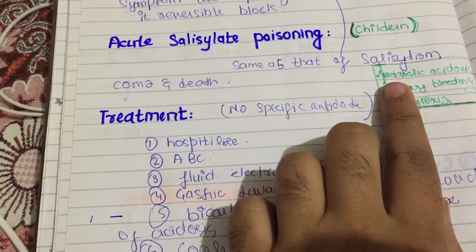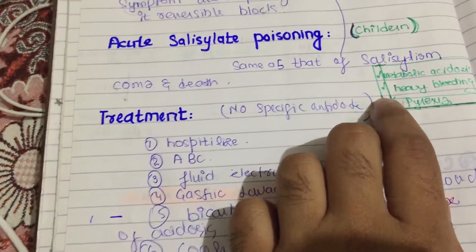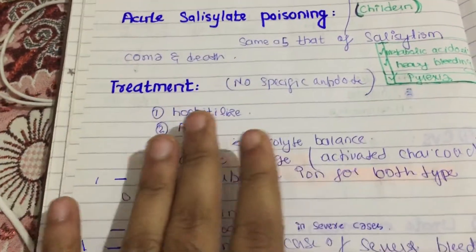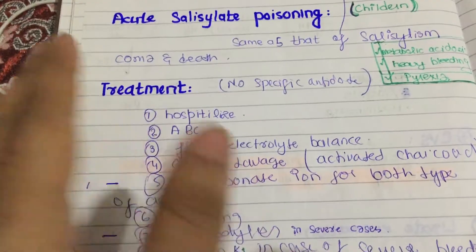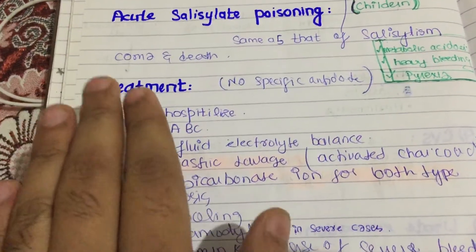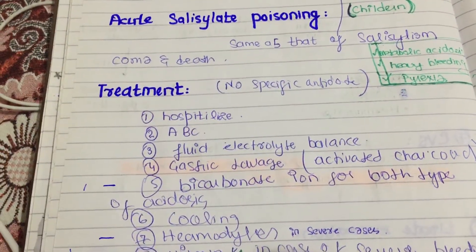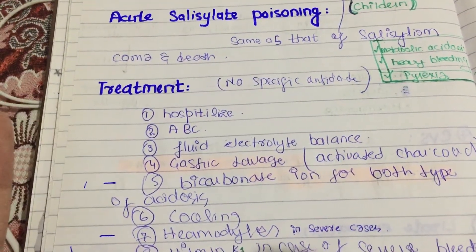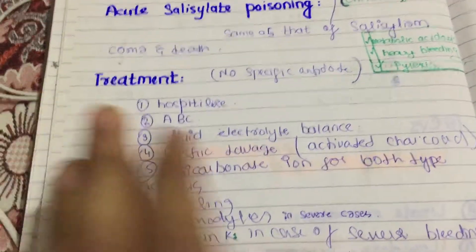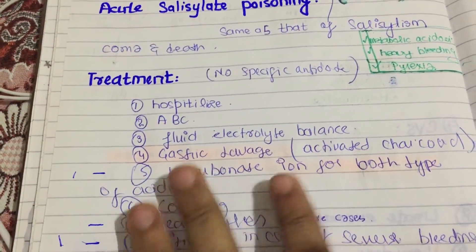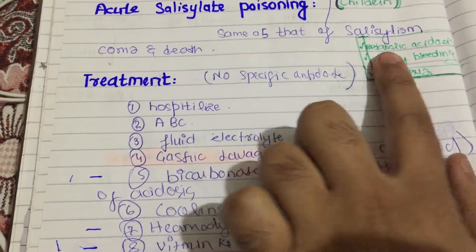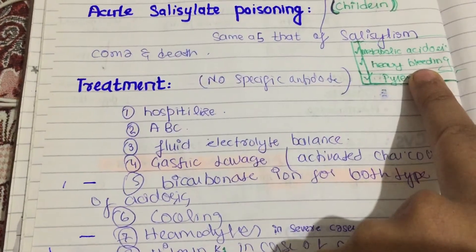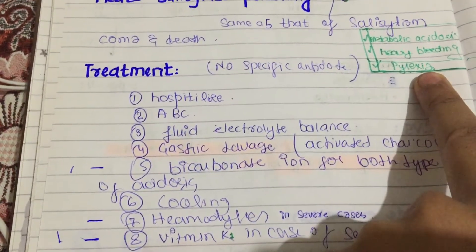There is no specific antidote. Treatment includes hospitalization, ABC — airway, breathing and circulation — fluid and electrolyte balance, gastric lavage, and activated charcoal. For metabolic acidosis, use bicarbonate. For heavy bleeding, use vitamin K. For pyrexia, cooling is required.